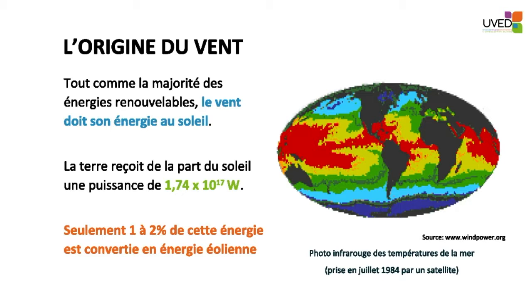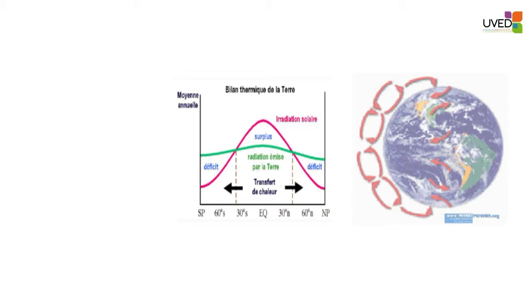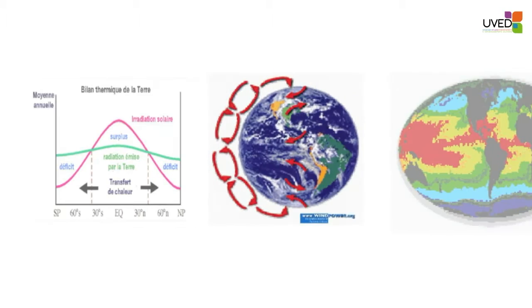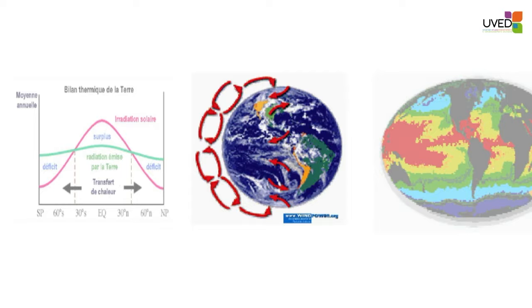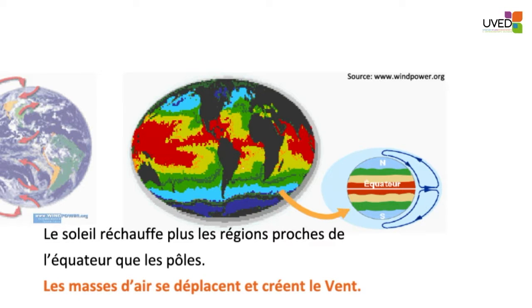Wind falls essentially on the equator, and if we calculate the thermal balance, we have a surplus of energy on the equator and a deficit on the poles, which means heat is transferred from the equator to the poles. Warmer air masses on the equator rise in altitude and cool down over the poles. The system is more complicated — there are several cells in each hemisphere, set in rotation by the Earth's rotation.